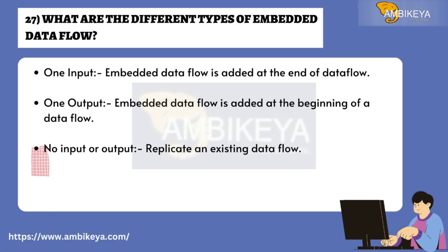Question 27: What are the different types of embedded data flow? One input: the embedded data flow is added at the end of a data flow. One output: the embedded data flow is added at the beginning of a data flow. No input or output: used to replicate an existing data flow.